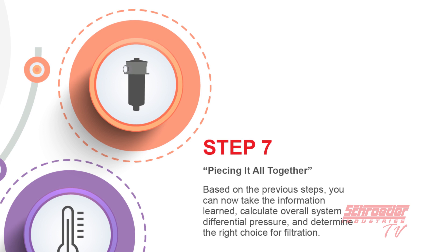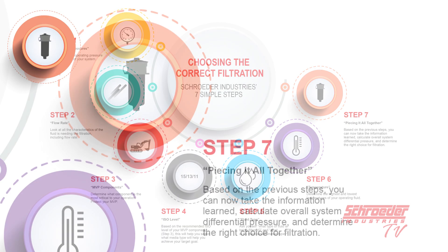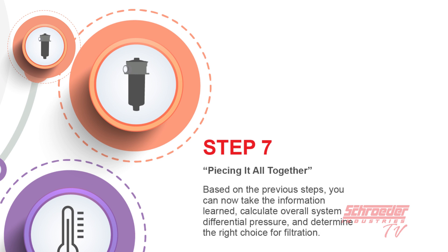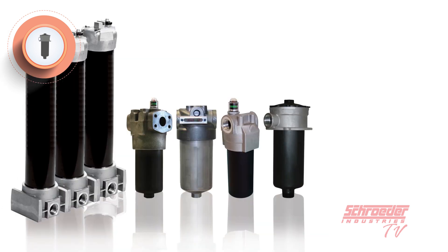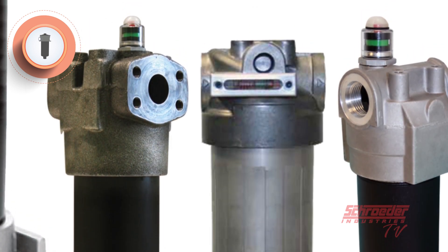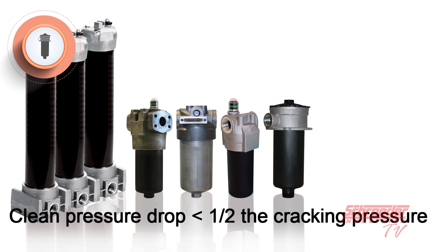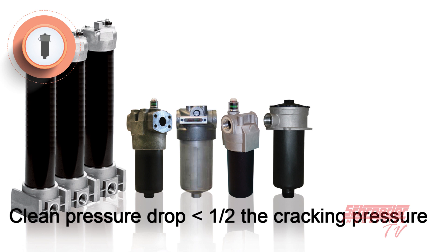Step seven is to piece it all together. With all the information gathered from steps one to six, you can calculate the overall system differential pressure. If all pieces come together correctly, your solution should result in your clean element pressure drop being less than half of the overall bypass cracking pressure at normal operating temperature and flow. Remember to note the porting options you need for your specific system and if you would like any contamination indicator options too.